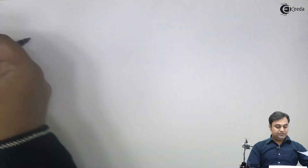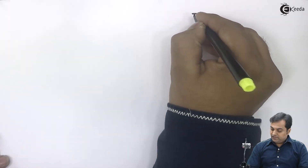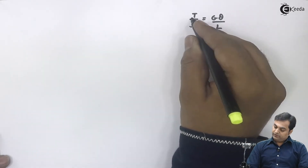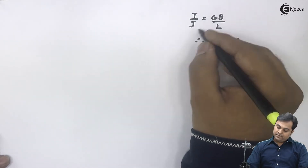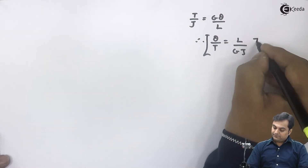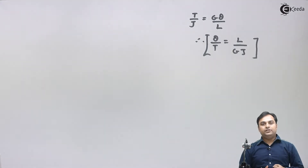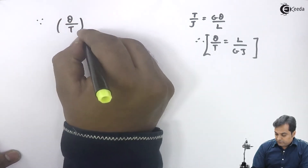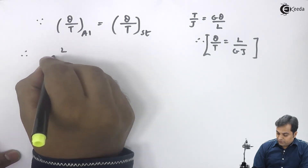Now I will utilize the condition given. Since theta by T, the angle of twist per unit torque, is the same for both shafts, from the torsion relation T/J = G*theta/L, we can derive that theta/T equals L/(G*J). Since theta/T is equal for aluminium and steel, we write: L/(G*J) for aluminium equals L/(G*J) for steel.